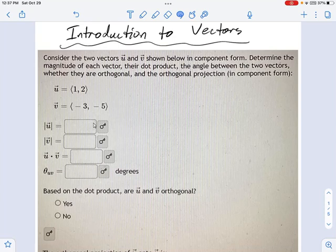Okay, we've got a bunch of things to figure out about two vectors here. We're given u and v in component form, and we're asked to find the magnitude of each, the dot product, the angle between them, and so on.